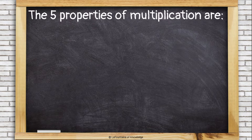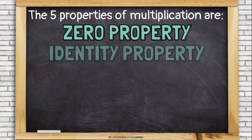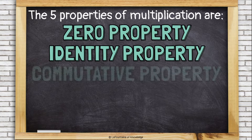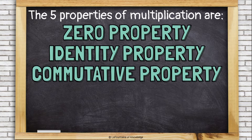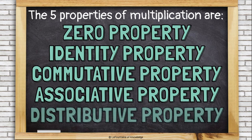The five properties of multiplication are the zero property, the identity property, the commutative property, the associative property, and the distributive property.